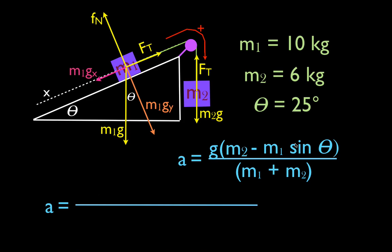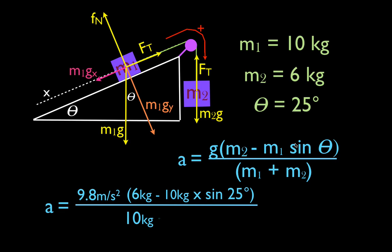Plugging in the numbers: g is 9.8, M2 is 6, M1 is 10, sin of 25 degrees is about 0.4, and the total mass is 16. So: 9.8 times (6 minus 10 times 0.4) divided by 16. That gives 9.8 times (6 minus 4) divided by 16, which is 9.8 times 2 divided by 16, giving a positive acceleration of 1.09 meters per second squared. The positive result confirms M2g is greater than M1gx.